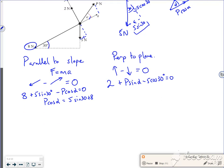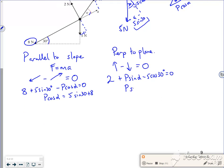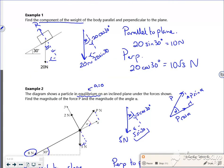So if I rearrange for P sin 30, P sin alpha sorry, it's 5 cos 30 minus 2. Now random, oh yeah, it's fine now. If I say that tan is sine over cos, so tan alpha is sine alpha over cos alpha. So I can divide through.